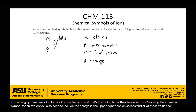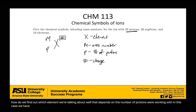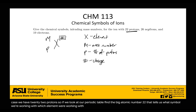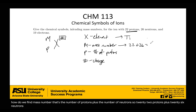How do we find which element we're talking about? That depends on the number of protons — in this case, 22 protons. Looking at the periodic table and finding atomic number 22, that corresponds to titanium, or Ti. The mass number is the number of protons plus the number of neutrons: 22 protons plus 26 neutrons gives a mass number of 48. The number of protons is 22.